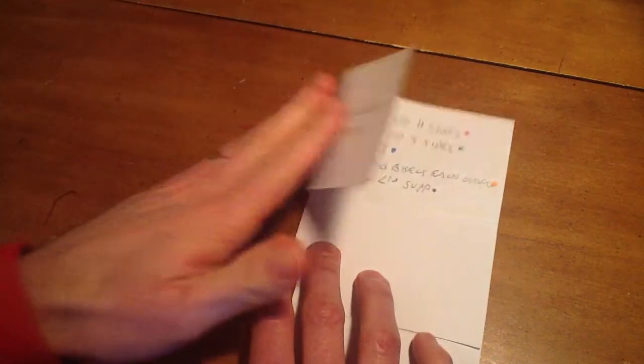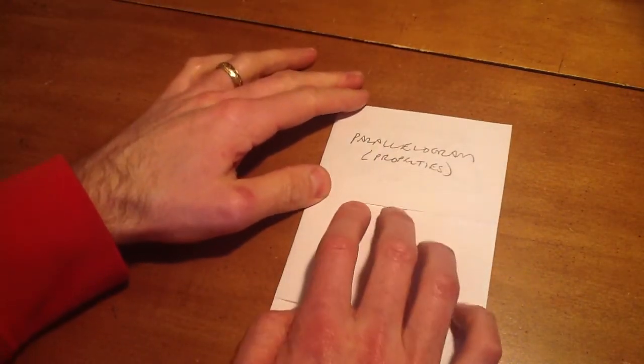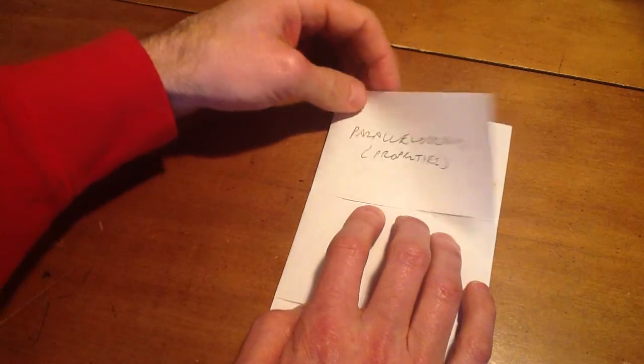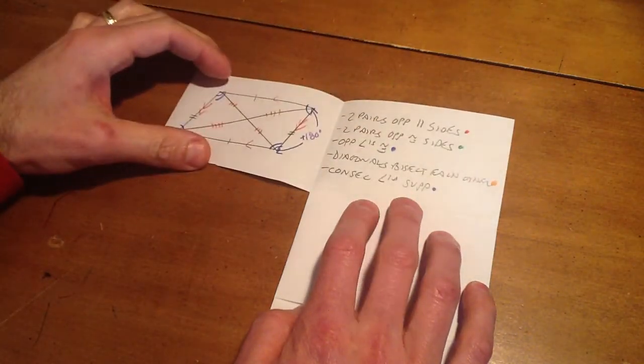So the way you do this is you would just close this up and say, what are the properties of the parallelogram? And you can quiz yourself. And then you have a visual and the statements to follow.